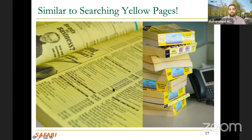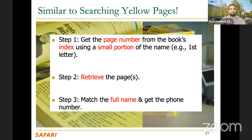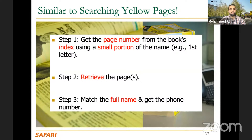In summary, it's really three steps. First, you need to get the page number from the book index using a small portion of the name, for example the first character. Second, you retrieve that page and go to that section. Then you try to match the full name character by character — first character, second character, third character — until you get the full name. Once you get the full name, you get the phone number. And this is exactly how we perform read mapping.